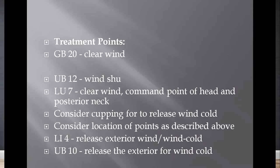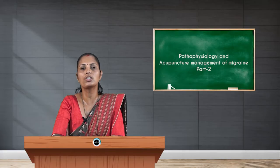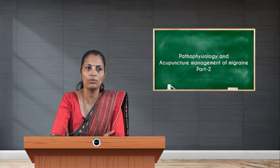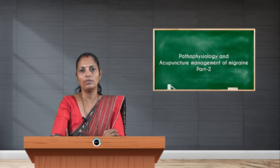One point is from the gallbladder meridian: GB 20, which helps to clear the wind. Next is UB 12 — the wind shu point — used for clearing the wind. It is located at the level of the second thoracic vertebra, 1.5 cun lateral to the midline. Lung 7 is one of the very important distal points corresponding to the head and posterior aspect of the neck, and it also helps to clear the wind.